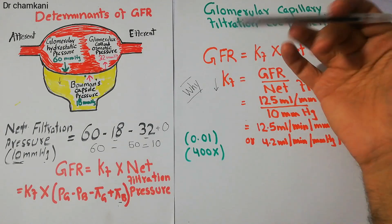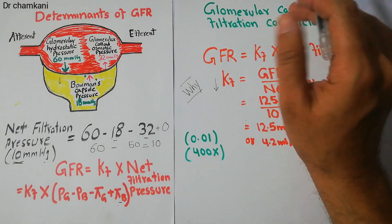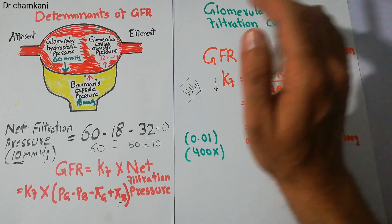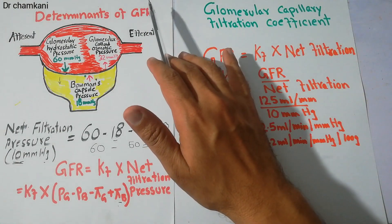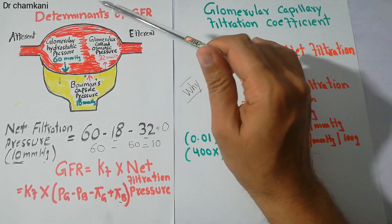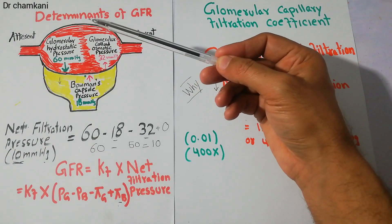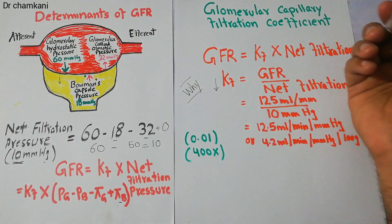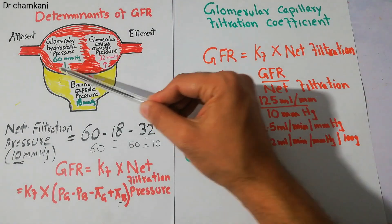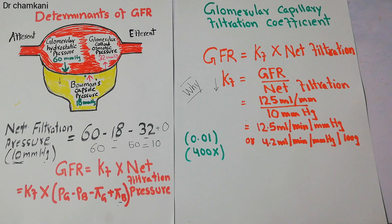The reason we discuss the filtration coefficient is that it is very important for normal filtration, normal GFR, normal permeability, and normal surface area. Any abnormality that destroys the structure of glomerular capillaries, disrupts the filtration process, or decreases the surface area of filtration will definitely decrease urine formation and have an adverse effect on renal functions. Thanks for watching the video.